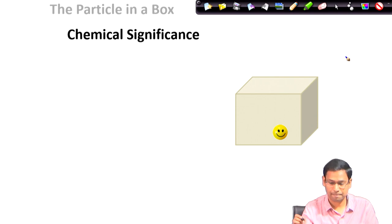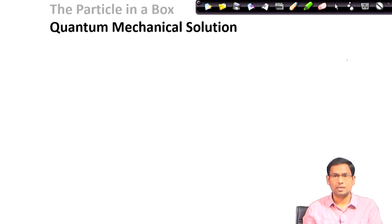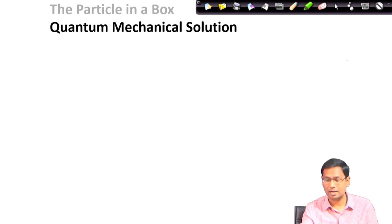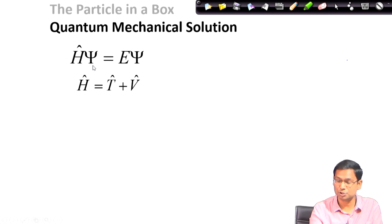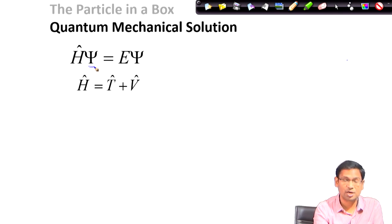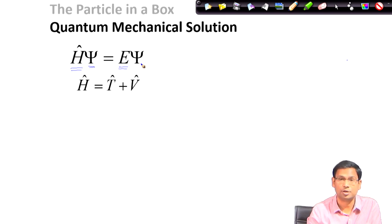We will now look at how to solve this system quantum mechanically. When we say we want to solve this problem quantum mechanically, we have the Schrödinger equation in mind. We already know that everything we need to know about a system is in the wave function psi, which has all the information, and this information can be extracted by applying an operator. The operator is the Hamiltonian operator, which corresponds to energy. When we apply the Hamiltonian operator to the wave function we get the observable energy — this is the Schrödinger equation.